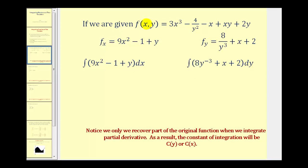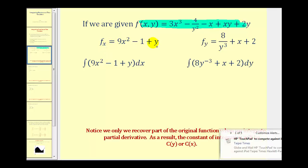So if we're given the following function in two variables, the partial derivative of f with respect to x would be 9x squared, this would be zero, this would be minus one, this would be y, and this would be zero. So here's the partial of f with respect to x.